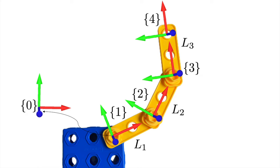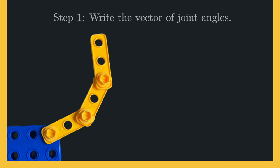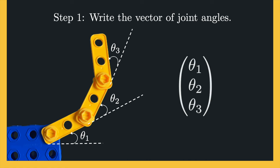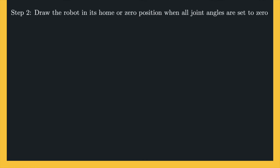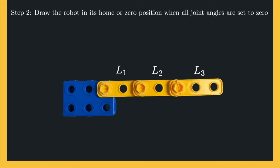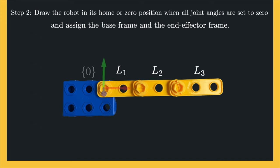In order to find the forward kinematics of a 3DOF planar open chain robot, we will follow these simple steps. Step 1 is to write the vector of joint angles. Since all the joints in this case are revolute, the vector of joint angles can be written as this vector. Step 2 is to draw the robot in its home or zero position — meaning all joint angles are set to zero — and then assign the base frame and the end effector frame.